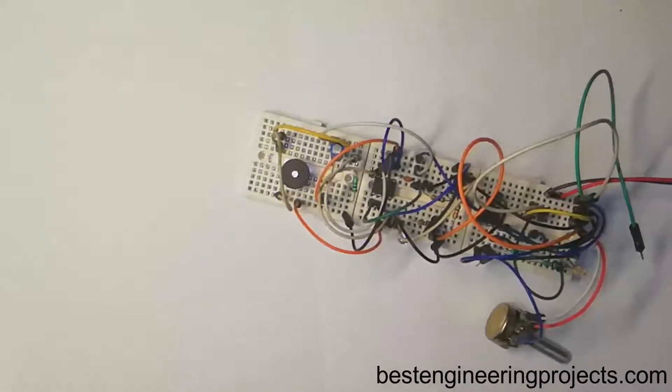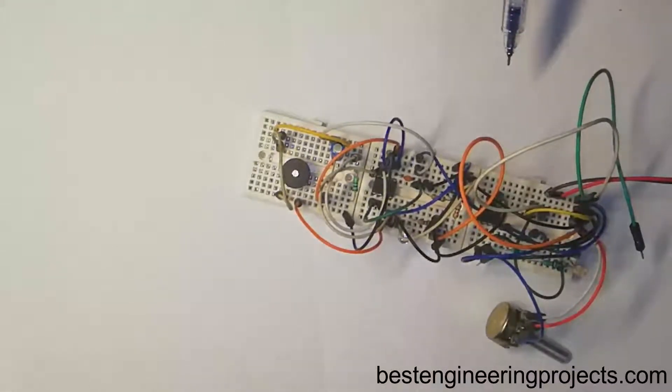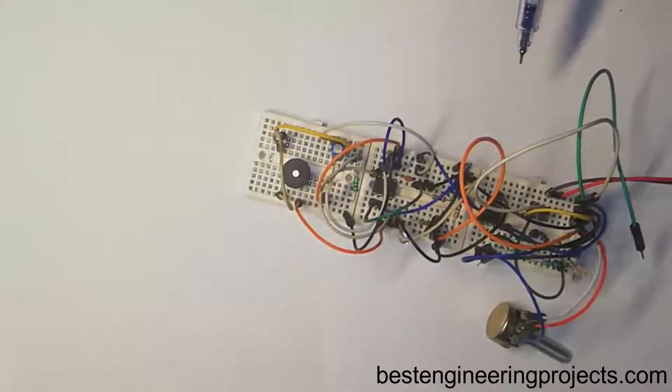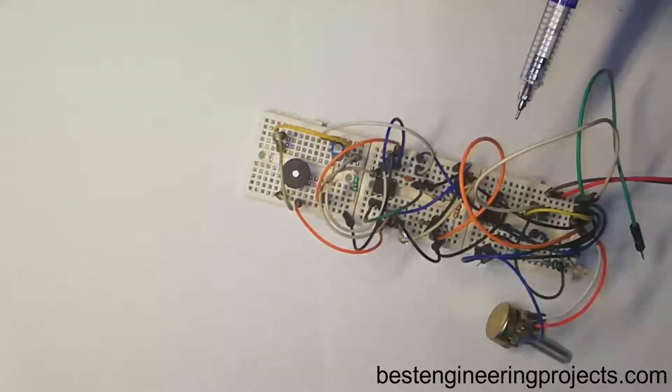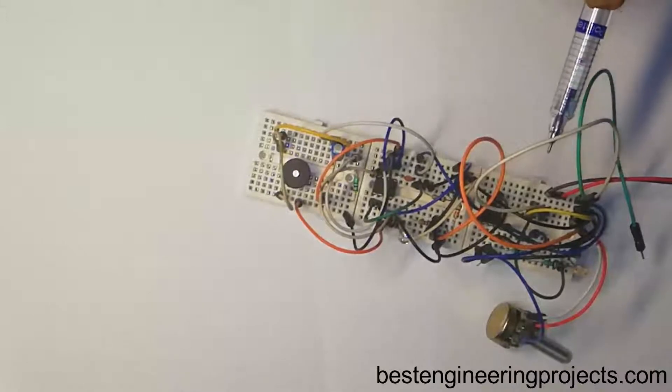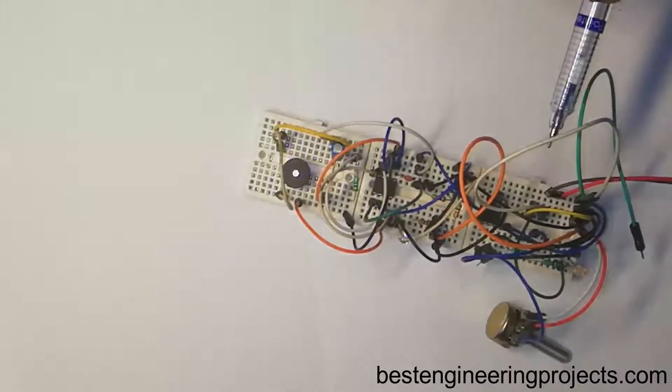Thus 4.5 voltage is available at inverting input pin 2 of 741 IC. The signal to be compared is available on non-inverting input, that is pin 3, from the potential divider network built using LDR and variable resistor RV1.